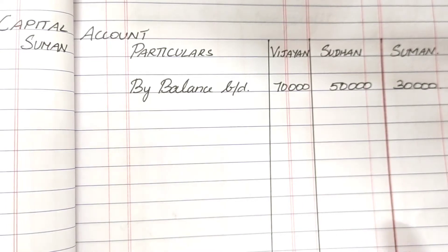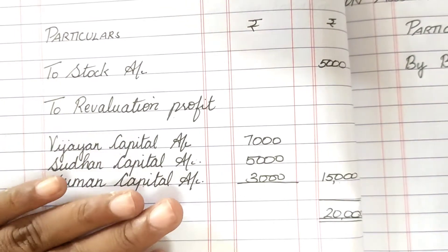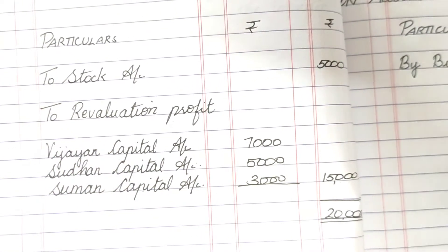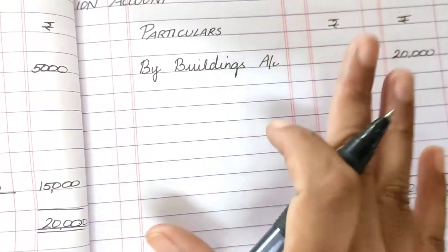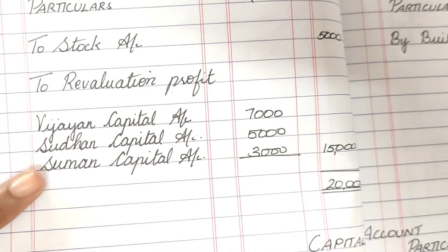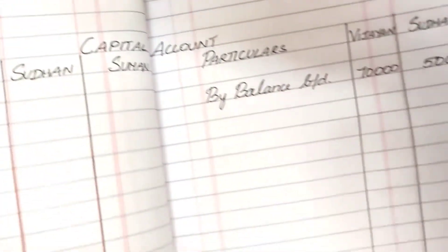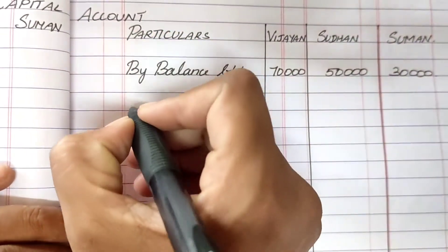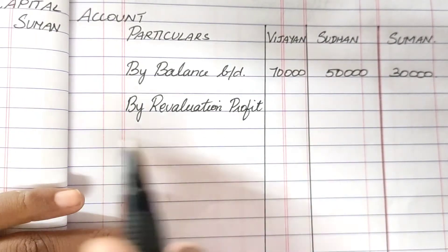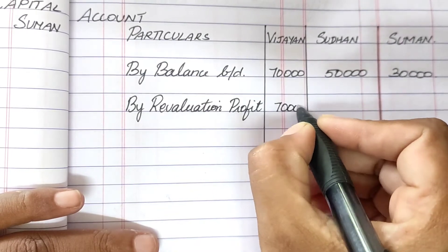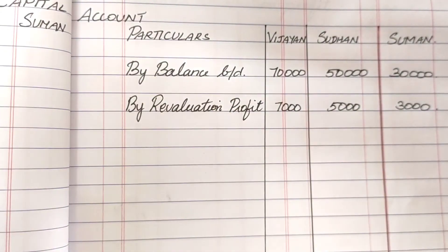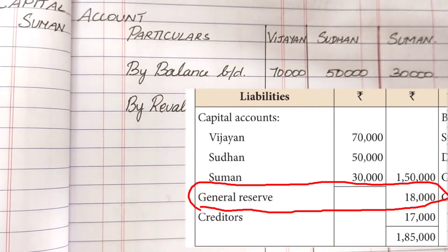We bring the revaluation profit from the revaluation account into the capital account. Remember: when transferring in partnership, debit side entries transfer to the credit side. The revaluation profit was on the debit side of the revaluation account, so it goes to the credit side of the capital account — By Revaluation Profit: Vijayan 7,000; Sudhan 5,000; Suman 3,000.